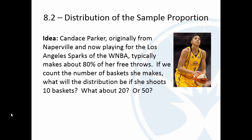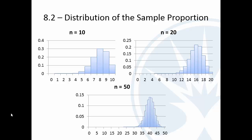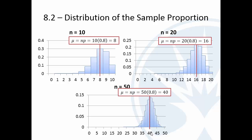If you look at those distributions, you'd expect her to make 80% of them, with some variation. If she shoots 10 free throws, we'd expect her to make 8, sometimes more, sometimes less. If she shoots 20, we'd expect her to make 16. Same thing for 50, we'd expect her to make 40.